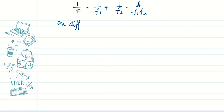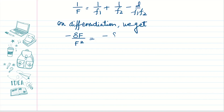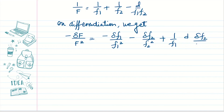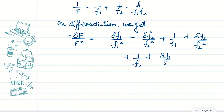Now we differentiate this mean focal length formula. On differentiation we get: -δF/F² = -δf1/f1² - δf2/f2² + d·δf2/f2²·(1/f1) + d·δf1/f1²·(1/f2). This is the expression we get after differentiation.